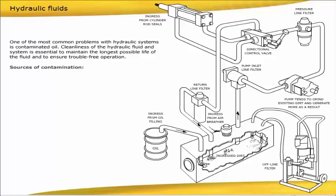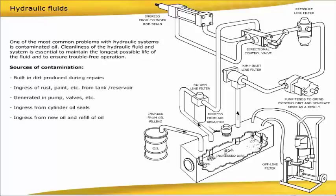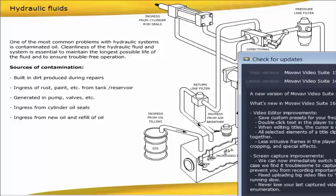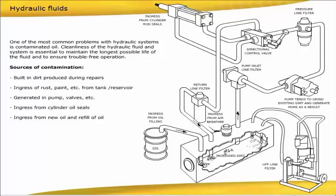Sources of contamination include built-in dirt produced during repairs, ingress of rust, paint, etc. from tank or reservoir, particles generated in pump, valves, etc., ingress from cylinder oil seals, and ingress from new oil and refill of oil. The importance of regular checks and replacement of line filters cannot be stressed often enough.